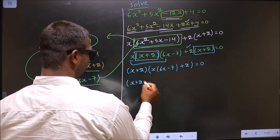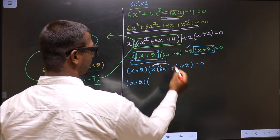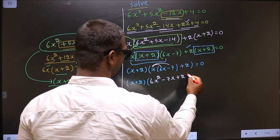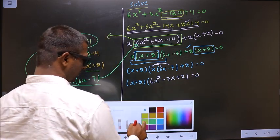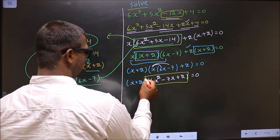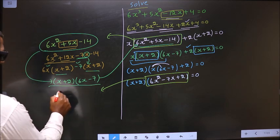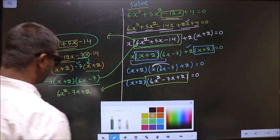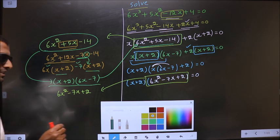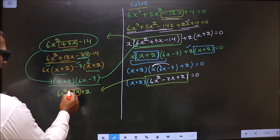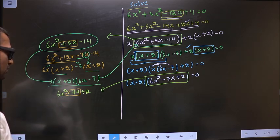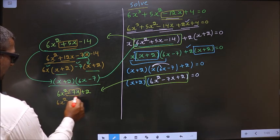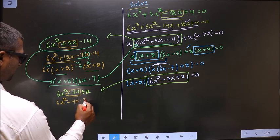So (x + 2), and opening up the bracket, you get 6x² - 7x + 2 = 0. So I got a quadratic again. I will factorize 6x² - 7x + 2. To factorize this, I need to change the middle term, that is minus 7x. So 6 × 2 = 12, and 4 + 3 = 7, and 4 × 3 = 12. So in place of minus 7x, I write minus 4x - 3x + 2.